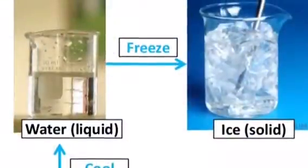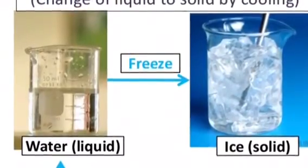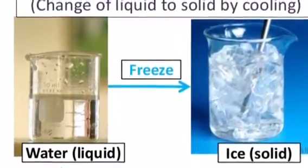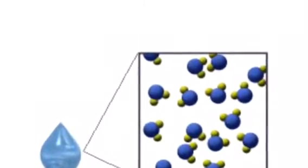The next change of state is from a liquid to a solid. This happens by something called freezing. This happens when the energy decreases so much that it ends up turning back into a solid.